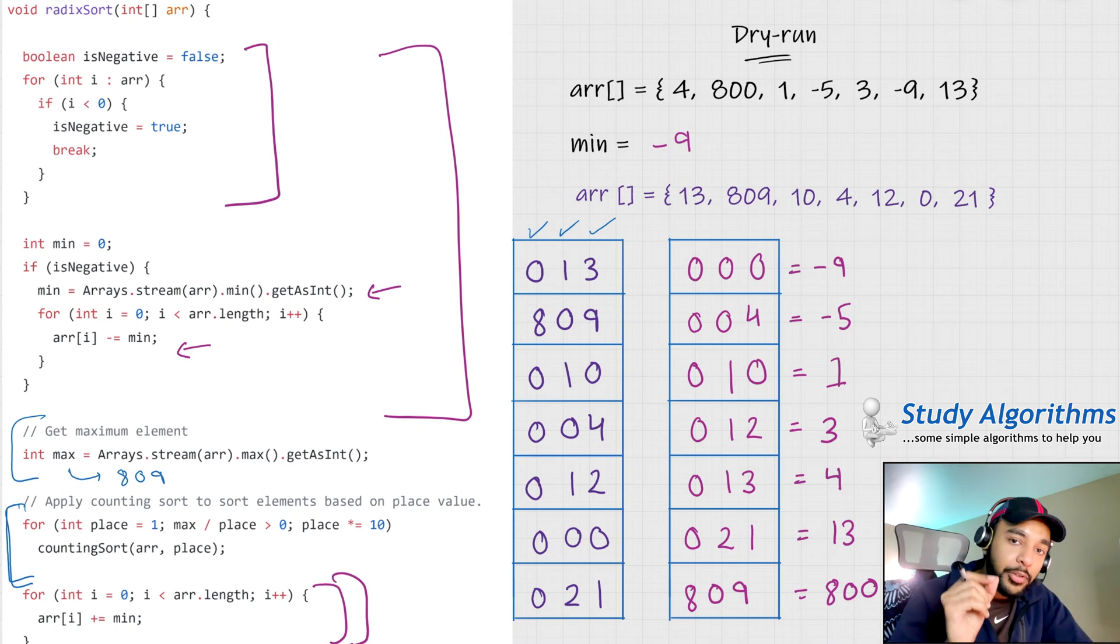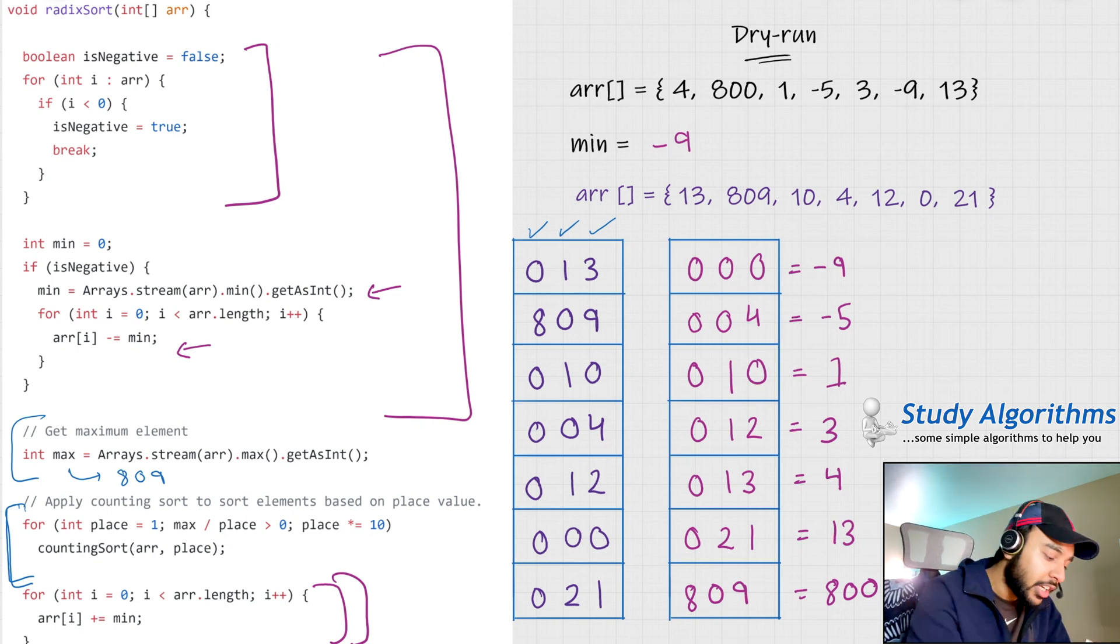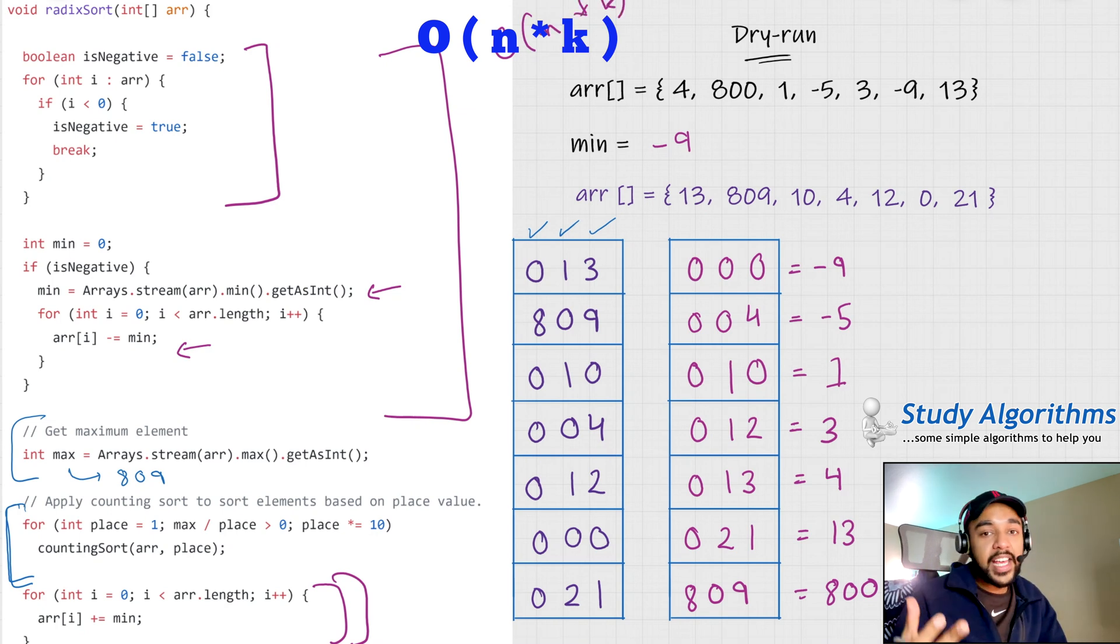Notice that we are using counting sort to sort the numbers at each of the positions. That is because counting sort is a stable sort and it will maintain the order in which these elements are encountered in the array. I am including a link to the counting sort algorithm in case you want to check it out. The time complexity of this algorithm is order of n multiplied by k, where k is the maximum number of digits you have in any element because that is the number of times you have to sort all of these numbers, right?